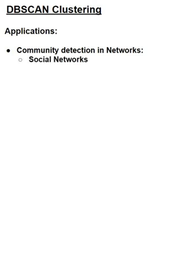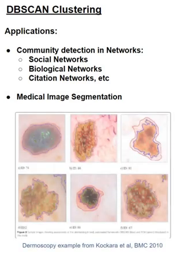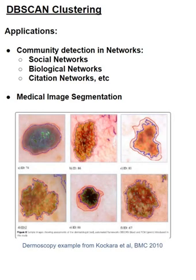Now, let's quickly review a few applications and use cases for DBSCAN. First, it's very useful for identifying and detecting communities in networks, in examples like social networks, biological networks, and even citation networks for research papers and books. It has also been used in medical image segmentation, like the example that is shown below for dermoscopy, which was highlighted in Kokara's paper using DBSCAN in 2010. Those are the two important elements within the application space.